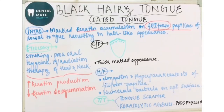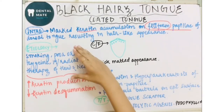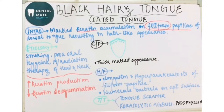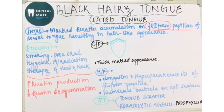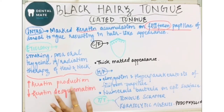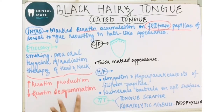Now why is this happening? The etiological factors related to black hairy tongue are smoking, poor oral hygiene, or history of radiation therapy of the head and neck region. Because of these factors, there is marked keratin accumulation — either keratin production is increased, or keratin is not being desquamated. So either there is increased keratin production or there is decreased keratin desquamation.